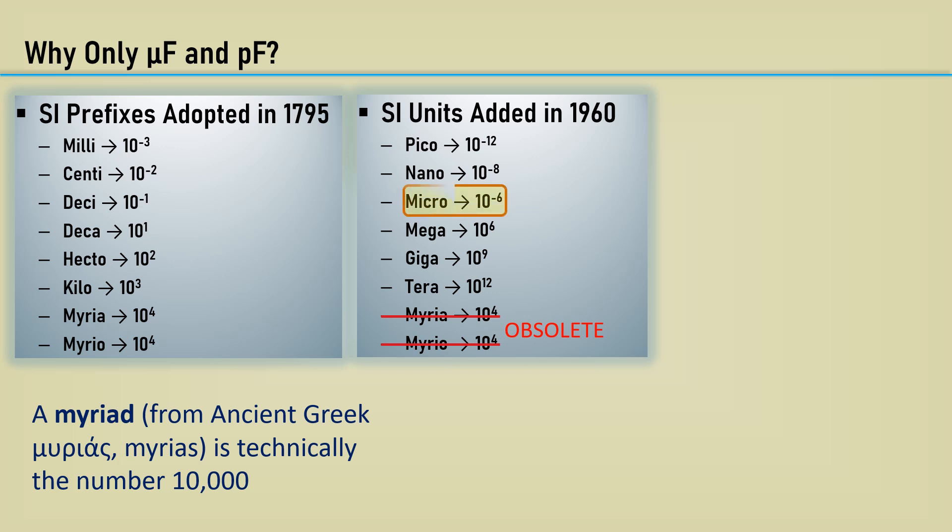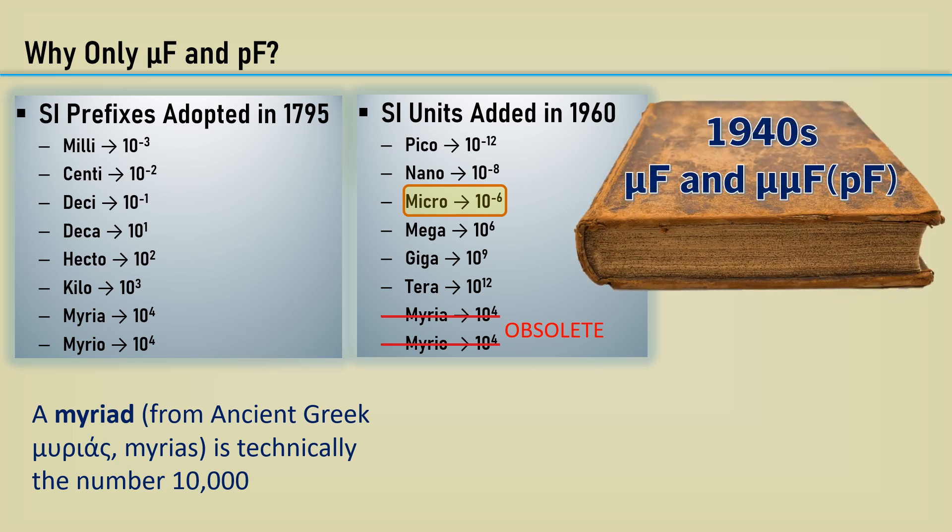Although micro was adopted as an official SI unit in 1960, it was used long before then. Microfarad is found in 1940s textbooks in addition to micro microfarads, which was equivalent to picofarads.